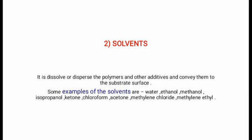The second part of tablet coating composition is solvents. Solvents dissolve or disperse the polymers and other additives and convey them to the substrate surface. The ideal requirements of solvents are: it should dissolve or disperse the polymer system, have no environmental impact, have a rapid drying rate, and easily disperse other coating solution components. Examples of solvents are water, ethanol, methanol, isopropanol, ketone, chloroform, acetone, methylene chloride, and methylene ethyl.